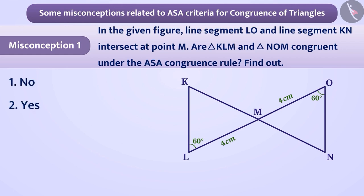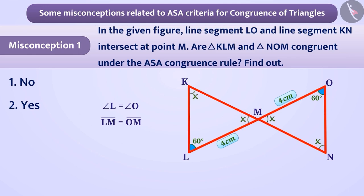In the given figure, one angle of triangle KLM and triangle NOM are equal, that is, angle L is equal to angle O. And the sides of both triangles are also equal, that is, LM is equal to OM. But since the measurement of the other angles are not shown, some students believe that both triangles, triangle KLM and triangle NOM, are not congruent under the ASA congruence rule.